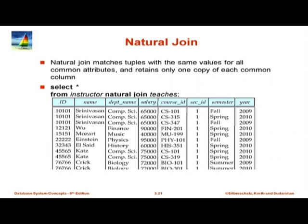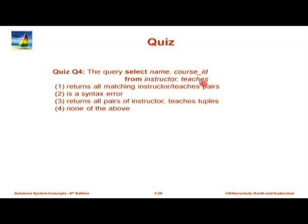How do you write the query properly? There are several ways. One way is to add a WHERE clause with conditions matching all the corresponding attributes. The common attribute between instructor and teachers is the ID of the instructor. So you could add 'WHERE instructor.id = teachers.id' and that would be the right answer.